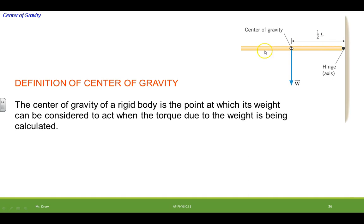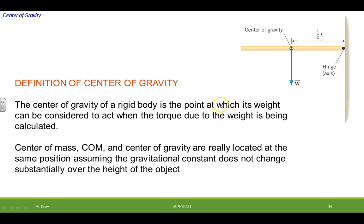So we take a rigid object like this and we determine what its center of gravity is. It's a point, in this case since it's uniform, right in the middle. The center of mass and the center of gravity are really located at the same point as long as we can consider the gravitational constant not changing over the height of the object. So if you take something like the Empire State Building, maybe the center of gravity and the center of mass may differ by a half inch or something like that. So for all intents and purposes they're really the same thing.